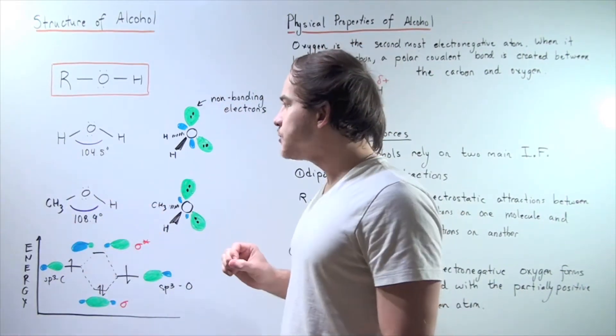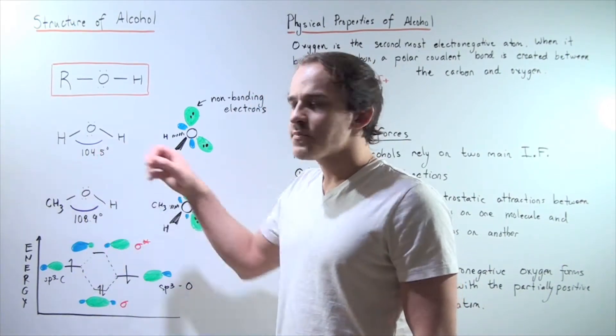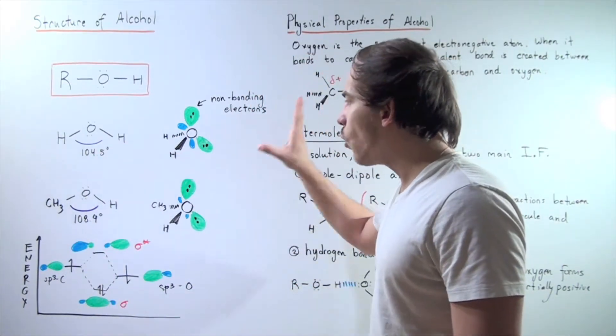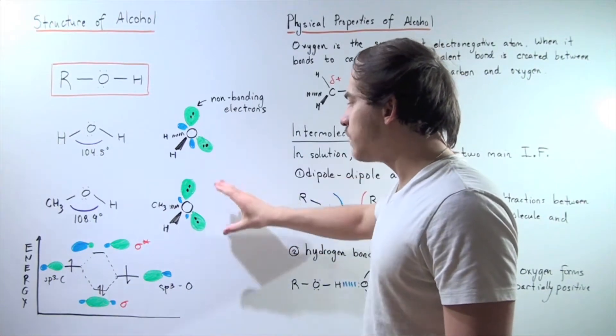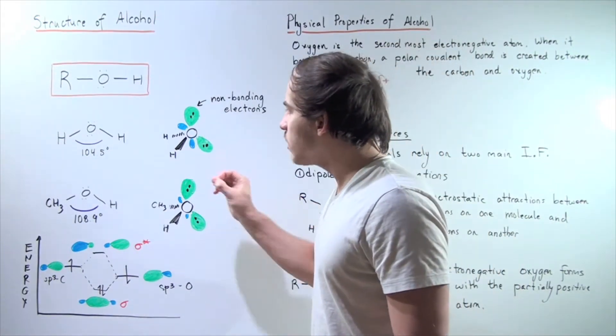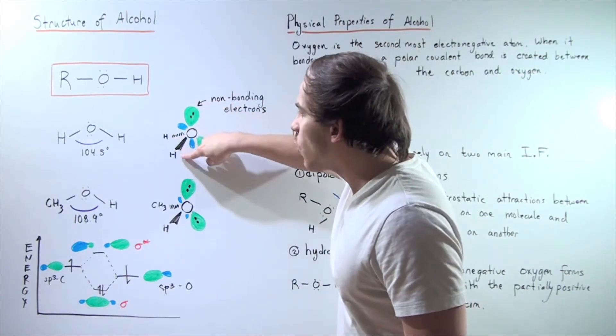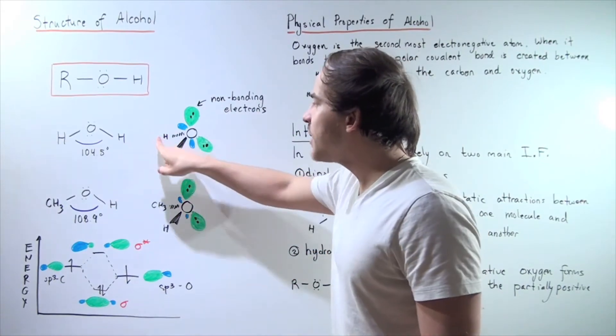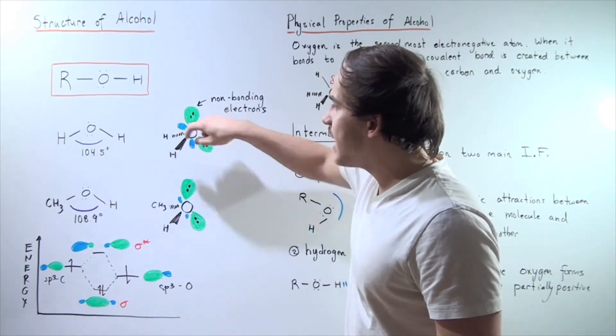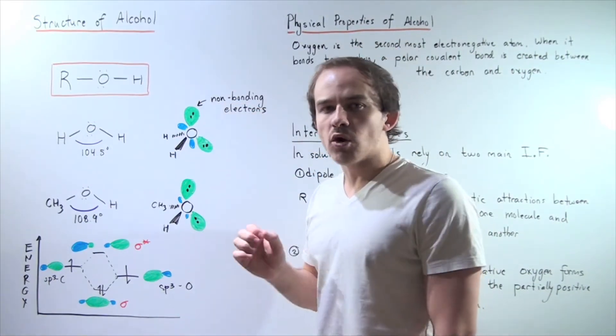To answer the question of why the angle here is larger than the angle here, let's look at the atomic orbital diagram for both of our compounds. Let's begin with water. Notice in water we have four sp3 hybridized orbitals. Two of these orbitals are bonding with the H atoms given here and there. These two orbitals are non-bonding orbitals.